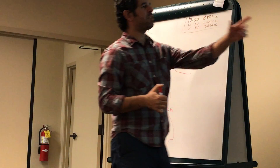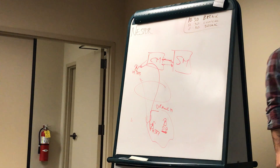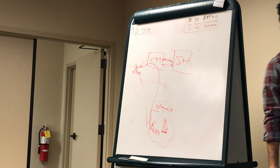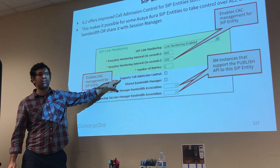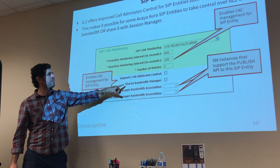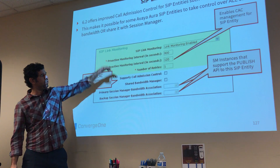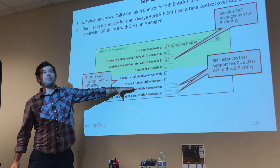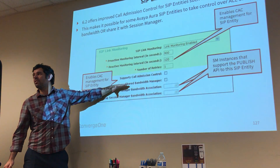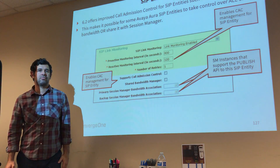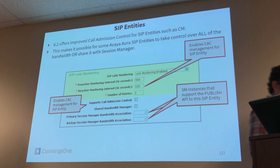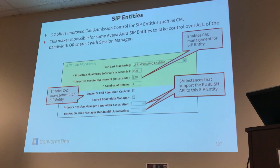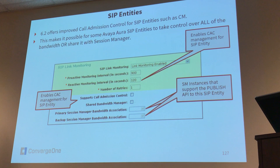They implement this with some extra fields that you'll see only for CM. If you put a check mark under these two fields, you're saying that you want CM to support call admission control, and also that you want CM to share the bandwidth control with Session Manager. This only matters if you're configuring call admission control — otherwise just forget about those parameters, they don't matter.